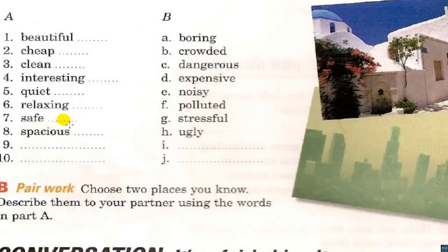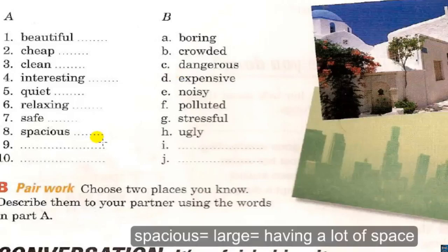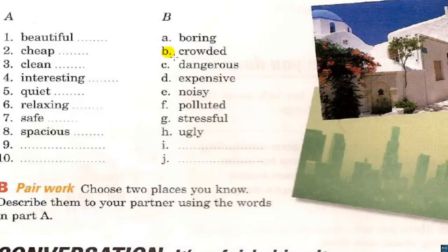Number 7: Safe — opposite: Dangerous. Answer: C. Number 8: Spacious — meaning you have a lot of space — opposite: Crowded, too small, you have a lot of things. Answer: B.